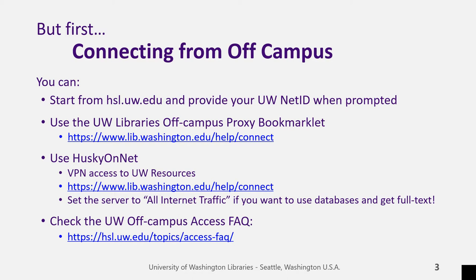Or you can use Husky OnNet, which lets you log into the UW network when you connect, so you don't need to log into each resource separately. For most library resources, make sure you select the All Internet Traffic option for the server. I will show you what this looks like on the next slide. We also have a FAQ for off-campus access, which covers troubleshooting and questions of who has access.